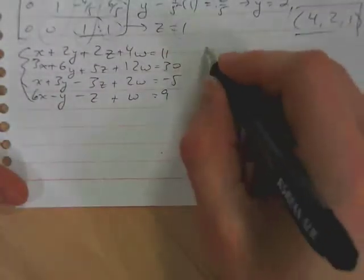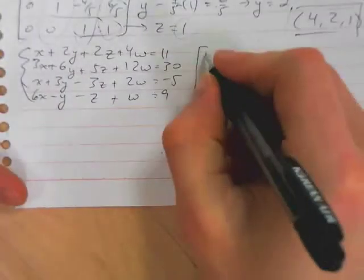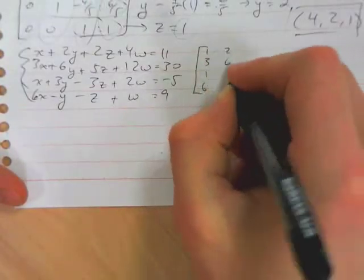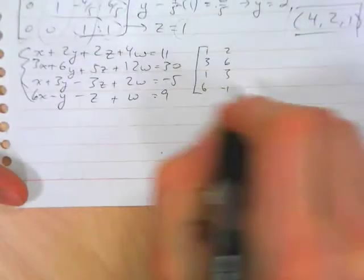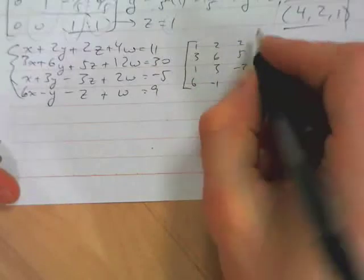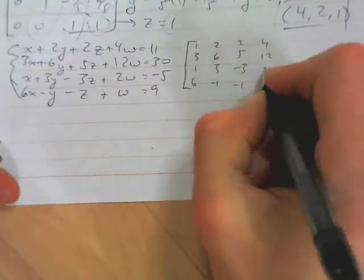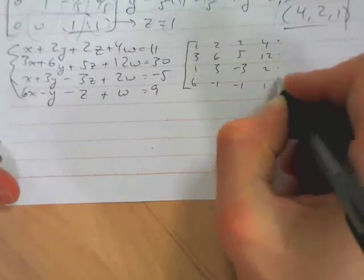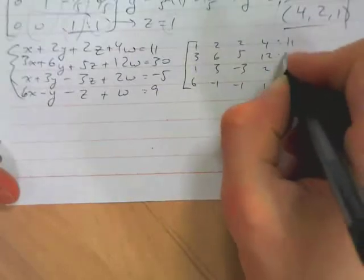We write out our coefficients: 1, 3, 1, 6, 2, 6, 3, negative 1, 2, 5, minus 3, minus 1, 4, 12, 2, 1, colons. So we're making an augmented matrix and then our solutions 11, 30, minus 5, 9.